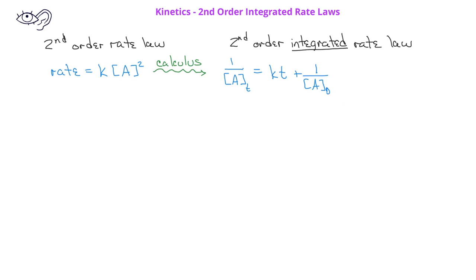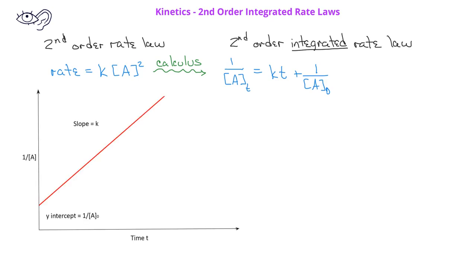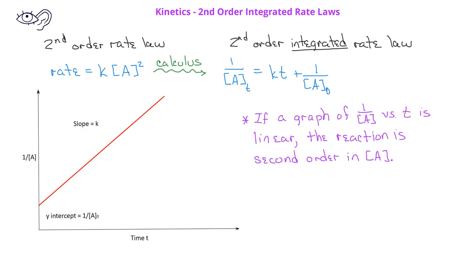This integrated rate law looks a lot like y equals mx plus b. This means we can make a graph with the reciprocal of the concentration on the y-axis and the time on the x-axis. In this case, the slope is a positive k. If we make this graph of the reciprocal of concentration versus time and the reaction is second order in reactant A, we'll see a straight line.